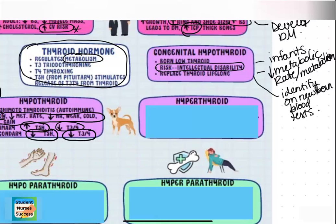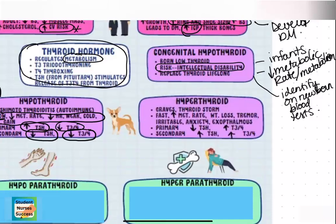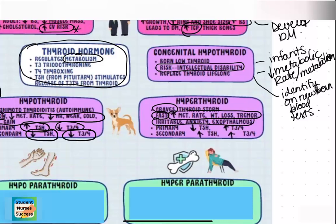Now let's talk about hyperthyroid, or too much thyroid. We call hyperthyroidism Graves' disease. We can also cause hyperthyroid by giving too much thyroid medication — giving too much can cause what's called a thyroid storm. When someone has too much thyroid, everything is very fast: increased metabolic rate, weight loss, tremors, irritability, anxiety, and exophthalmos, which is a bulging of the eyes. I have a picture of a chihuahua here — he's a little hyper, and his eyes look a little too large for his head, which reminds me of exophthalmos.